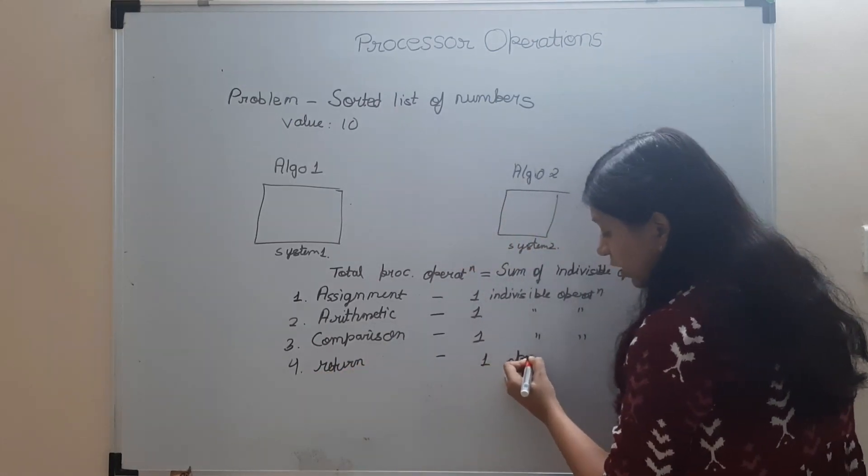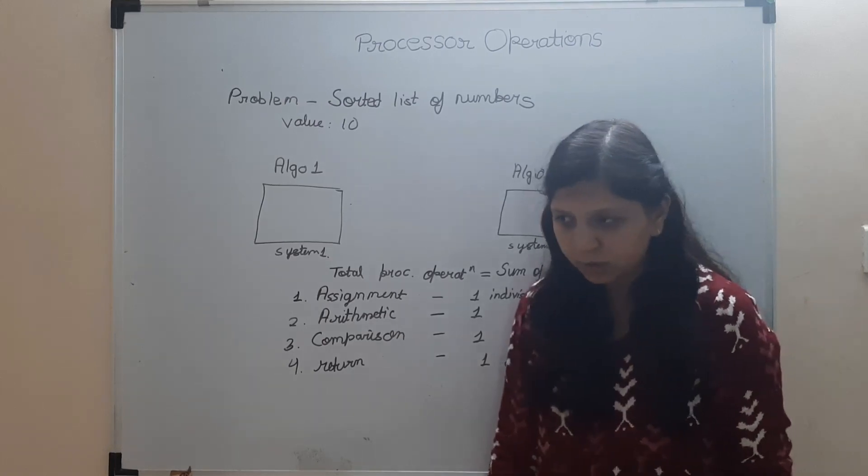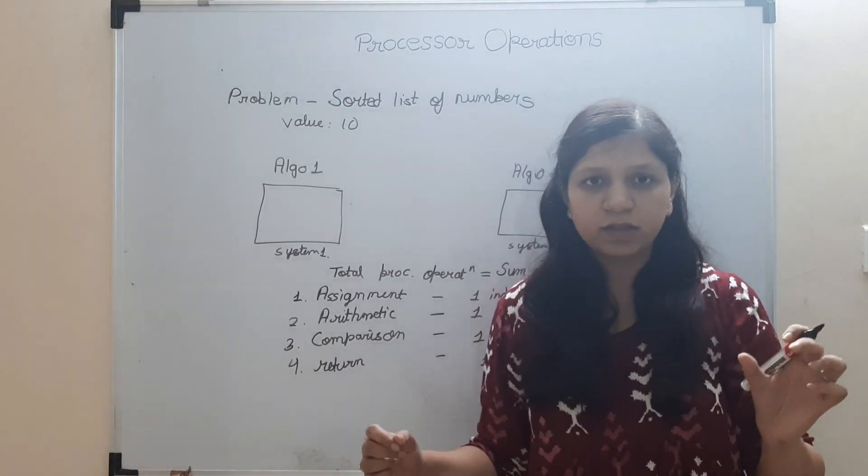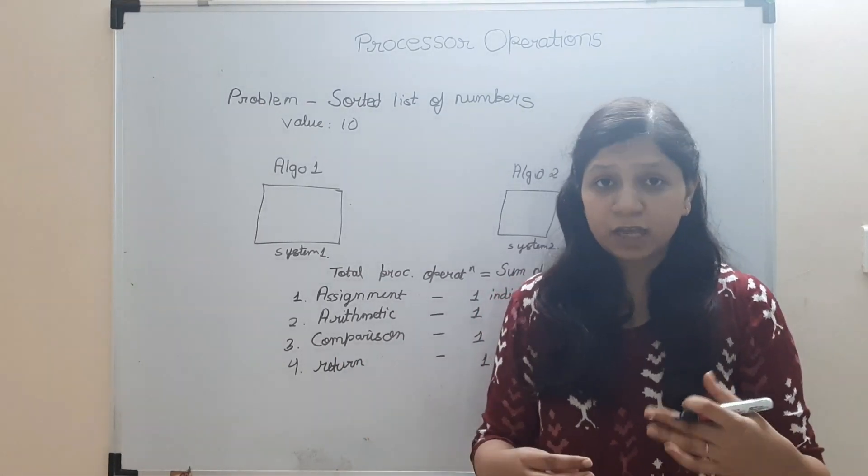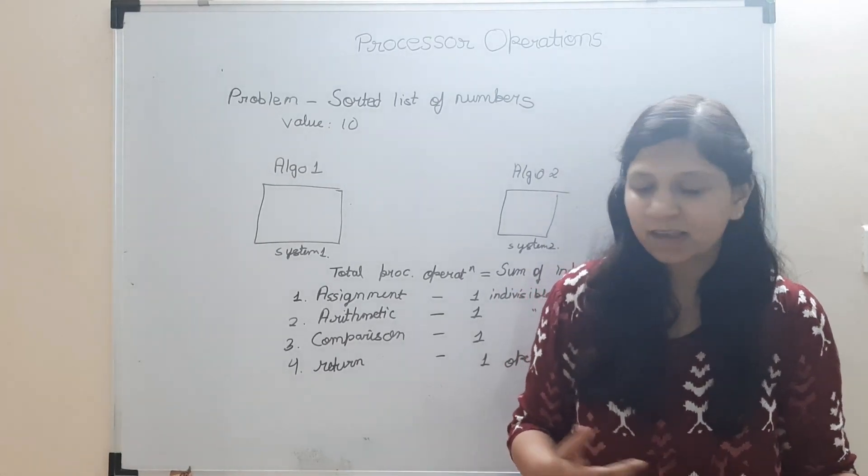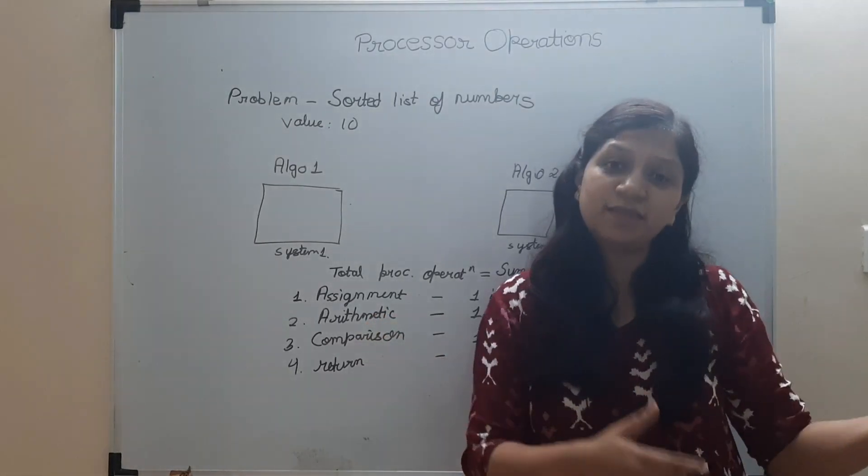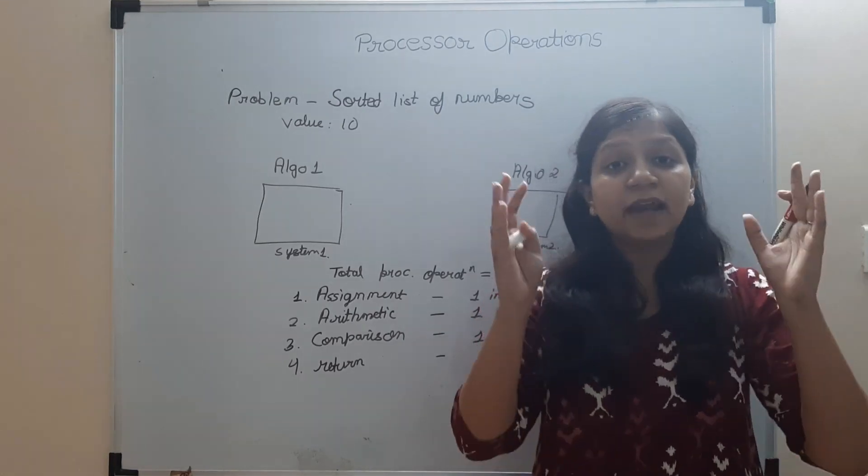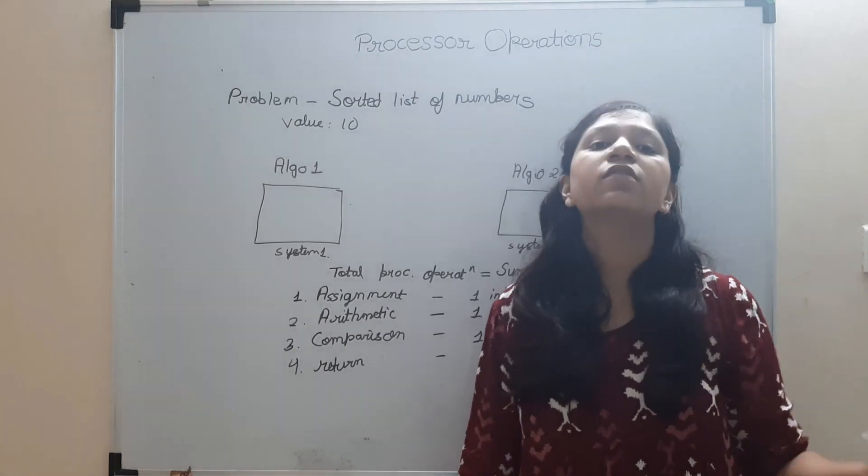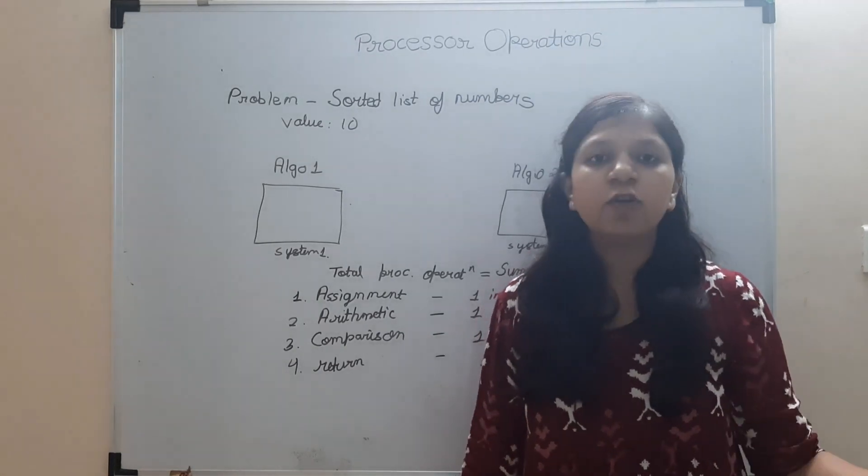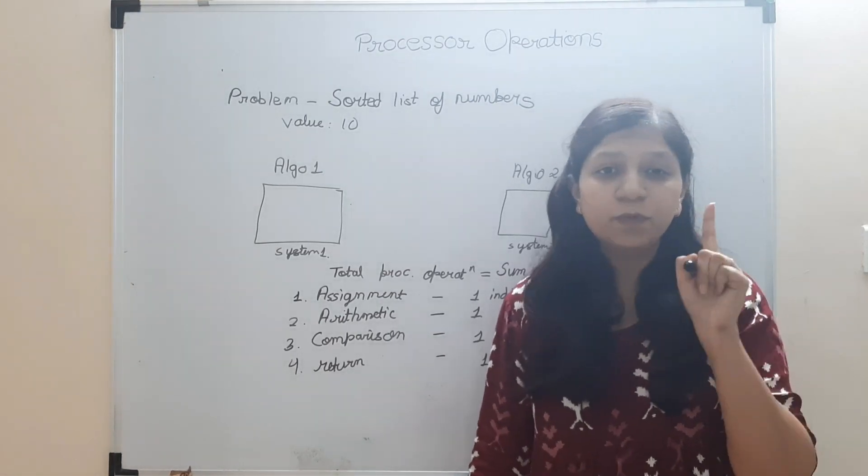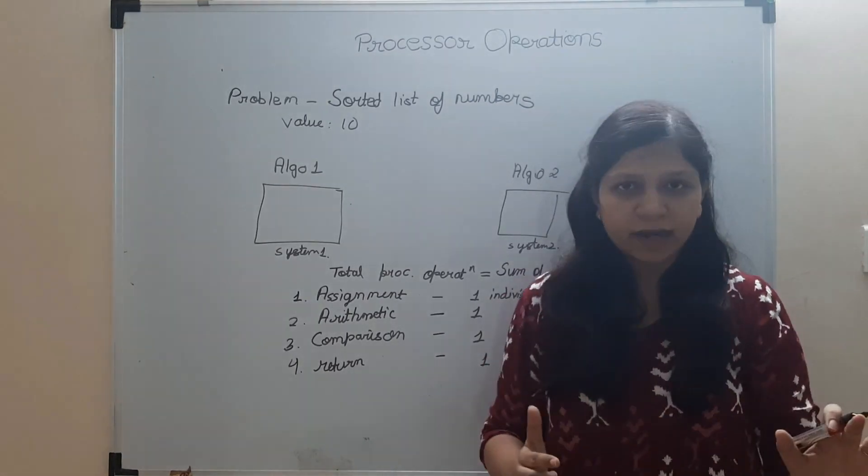Now, one thing I want to make clear: maybe in some system, this particular thing is taking more operations. For doing this indivisible operation, it is taking more cycles. But I will not say that it is taking three operations in this case. I am standardizing this thing here. It is going to take one processor operation, whatever the system is. These are the indivisible operations and those are going to take one operation, one processor operation. That is the standard.